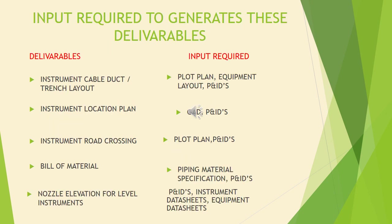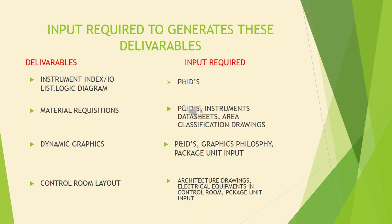Inputs required to generate deliverables: instrument cable duct/trench layout requires plot plan, equipment layout, and P&IDs. Instrument location plan requires GAD and P&IDs. Instrument road crossing requires plot plan and P&IDs. Bill of material requires piping material specification and P&IDs. Nozzle elevation for level instruments requires P&IDs, instrument data sheets, and equipment data sheets. Instrument index, I/O list, and logic diagram require P&IDs. Material requisitions require P&IDs, instrument data sheets, and area classification drawings. Dynamic graphics require P&IDs, graphics philosophy, and package unit input. Control room layout requires architecture drawings, electrical equipment in control room, and package unit input.